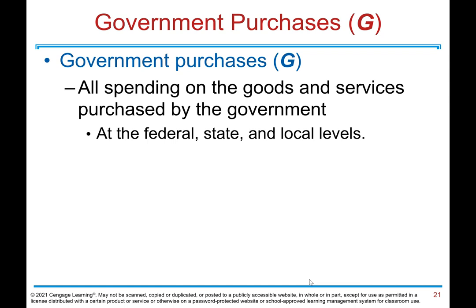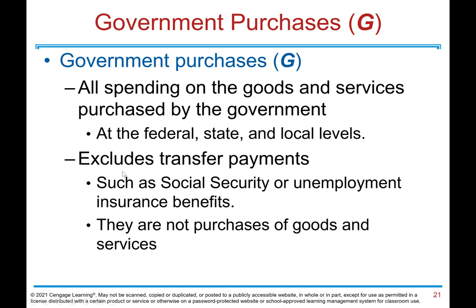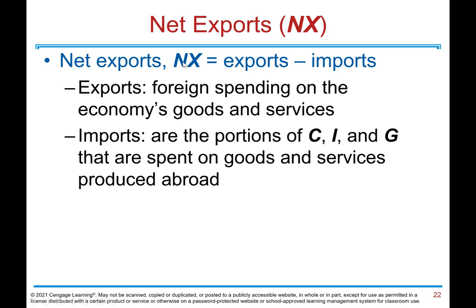Government purchases, or G, includes all spending on goods and services purchased by the government at the federal, state, and local levels. It excludes transfer payments such as Social Security or unemployment insurance, as they are not purchases of goods and services. Net exports, or NX, equals exports minus imports. Exports are foreign spending on the economy's goods and services. Imports are the portions of consumption, investment, and government that are spent on goods and services produced abroad.